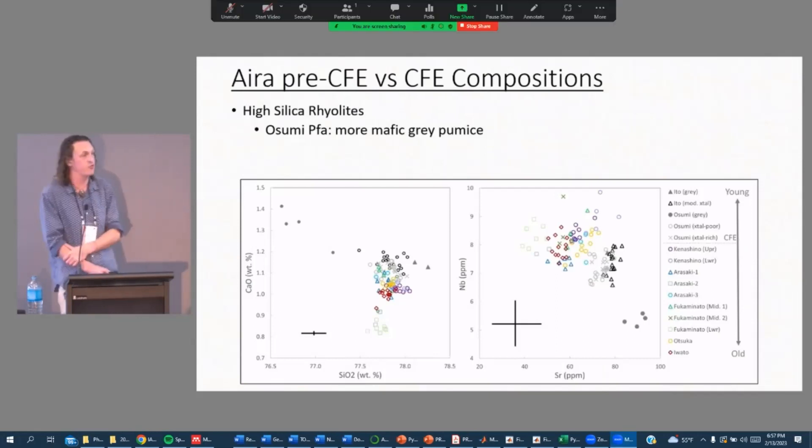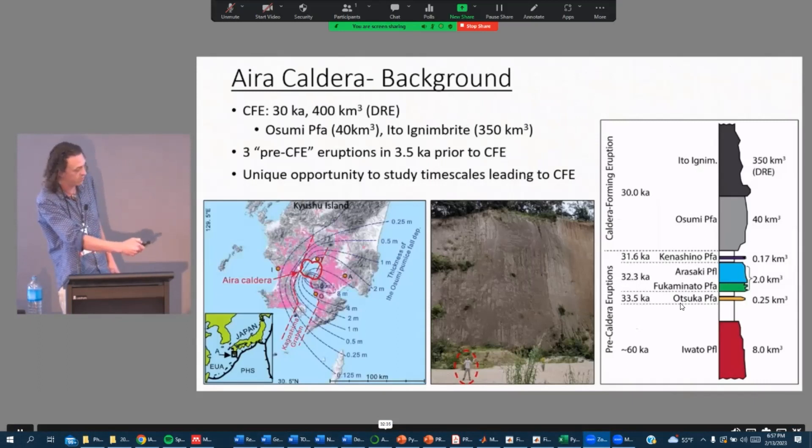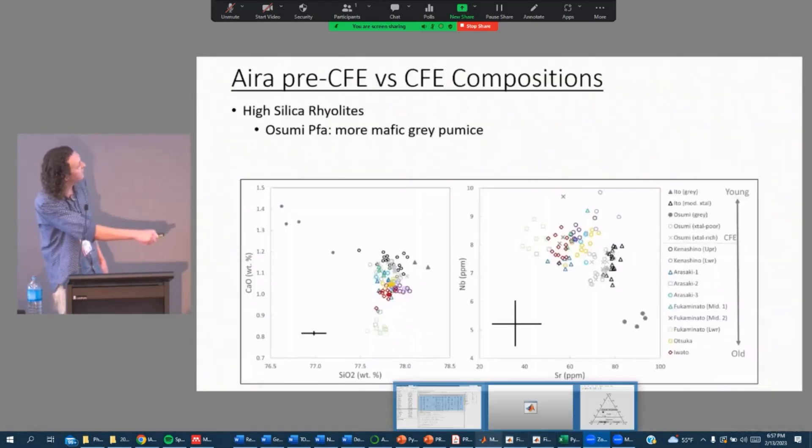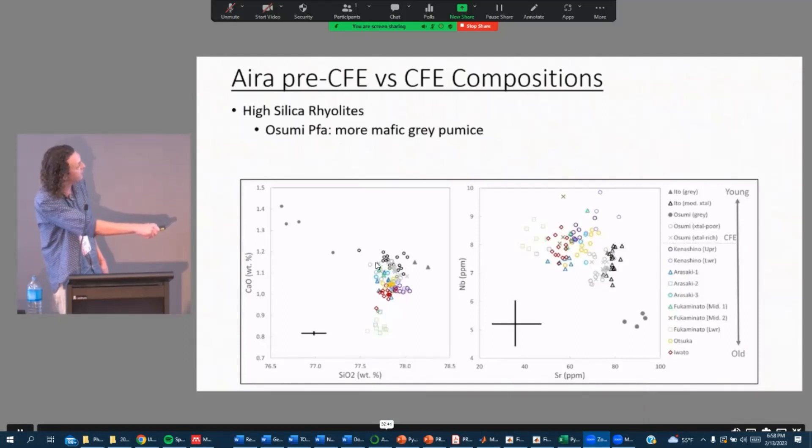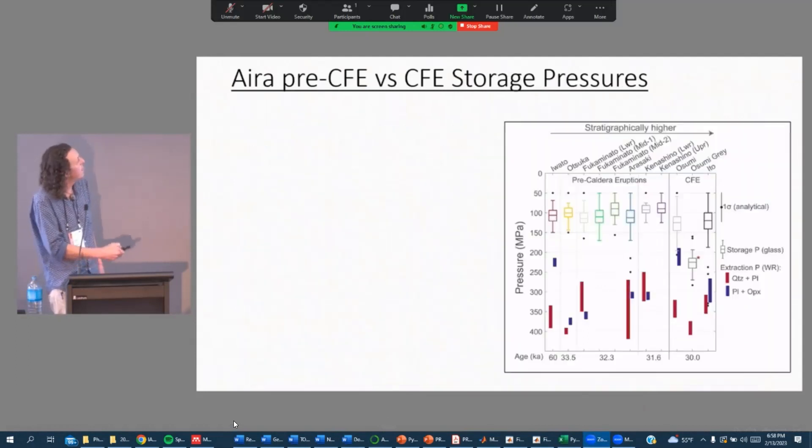So I'm going to present a couple of things that I've shown before, and then we'll get into the meat of the new stuff. The Aira Caldera are all high silica rhyolites. So both the pre-caldera shown in colors and the caldera forming eruption are all between 77.5 and 78 weight percent silica, except for this one gray pumice that erupted in the Osumi pumice fall. Major elements, they're pretty similar. In trace elements, there's some slight differences between the pre-caldera and the caldera forming eruption.